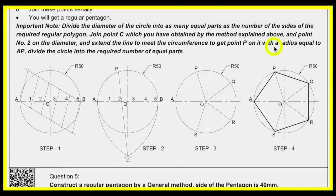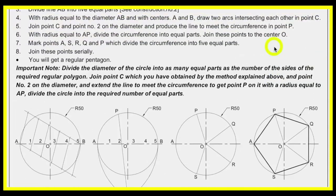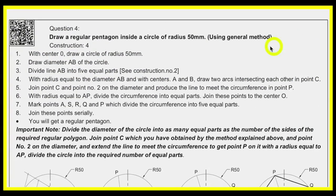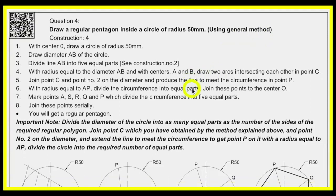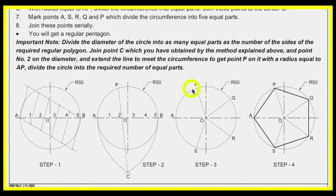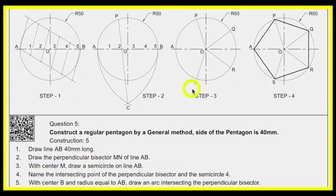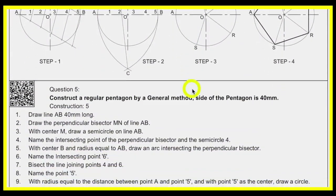Remember, this is the general method. If I want to draw a heptagon, I divide into seven parts; for an octagon, I divide into eight parts. But every time I will pass through point two.